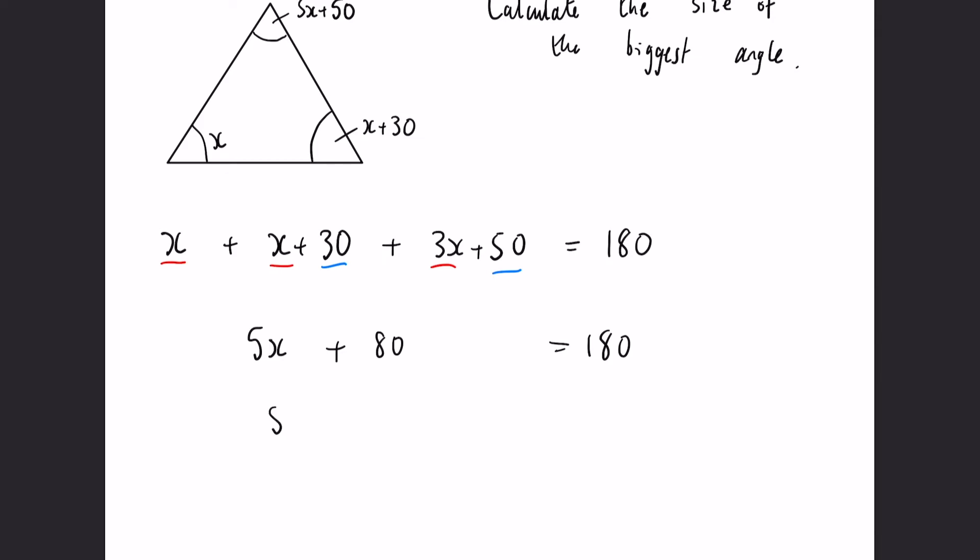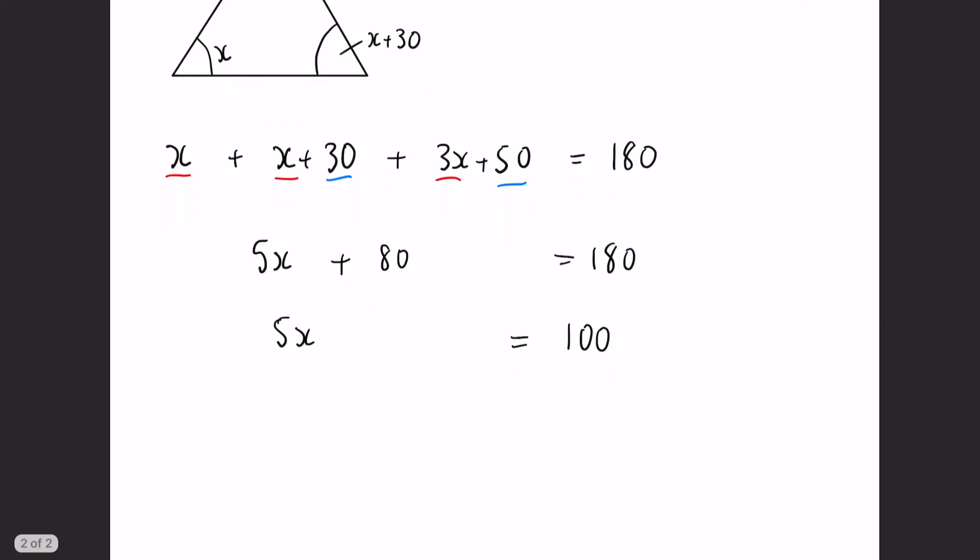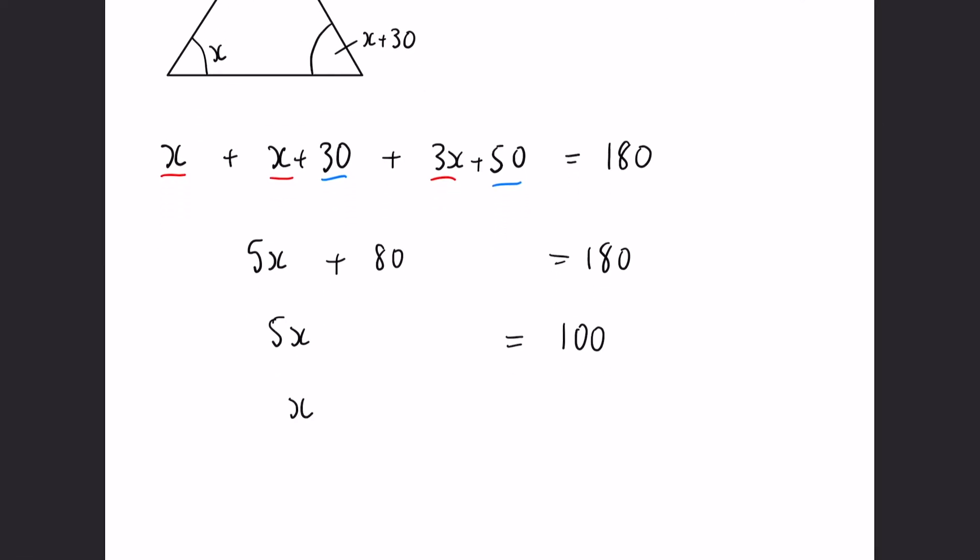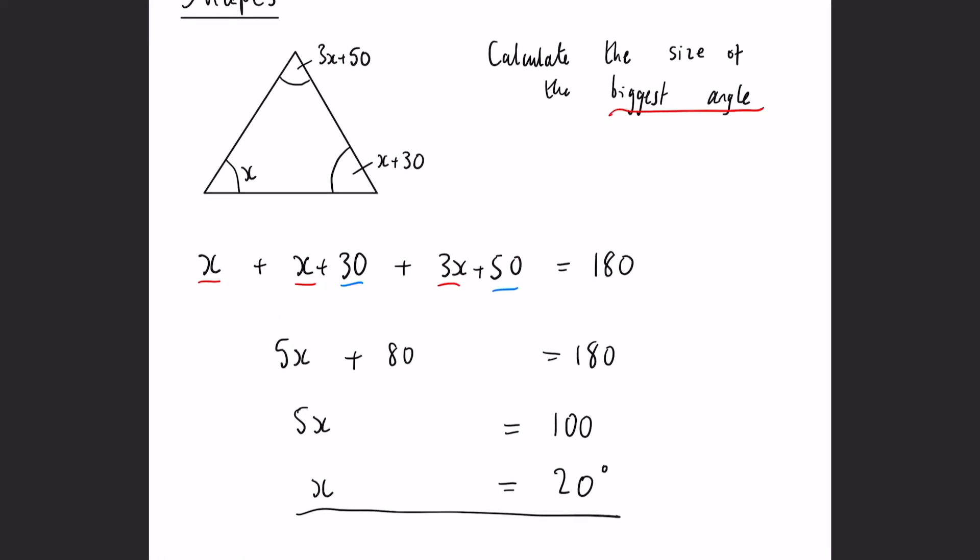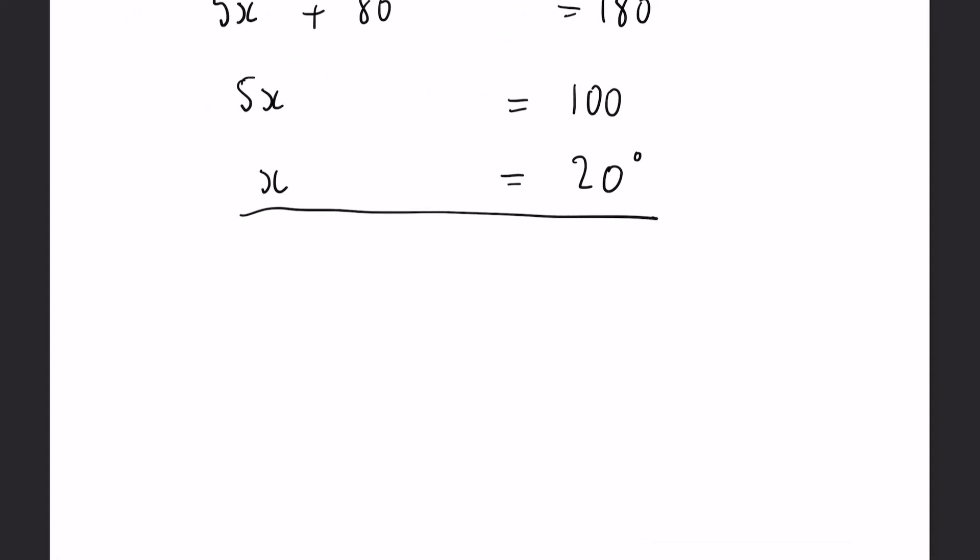Now, again, if we subtract 80 from both of those, 5x is going to equal 100. And finally, divide that by 5, x is going to equal 20 degrees. Now, they've asked us to calculate the biggest angle. We can see just by looking at it, the biggest angle is going to be this one, 3x plus 50.